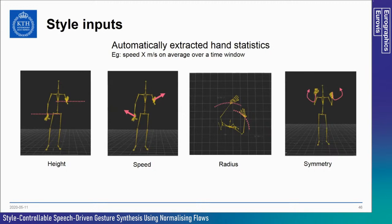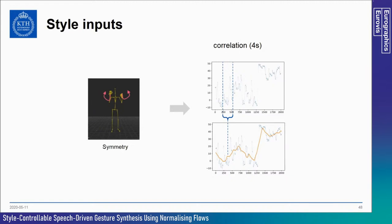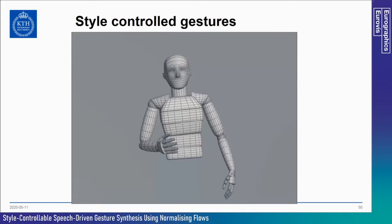For style control, we extract features controlling gesture height, speed, radius and symmetry, calculated from the positions of the hands. For height, radius and speed, we average-filter the signal over a four-second window. For symmetry, we use the correlation between the left and right hand over the same four seconds. Essentially, our control says the gesture should follow certain properties on average, but with room for variation. We trained four systems with different style controls, and generated examples using constant low, mid and high values for each style parameter.